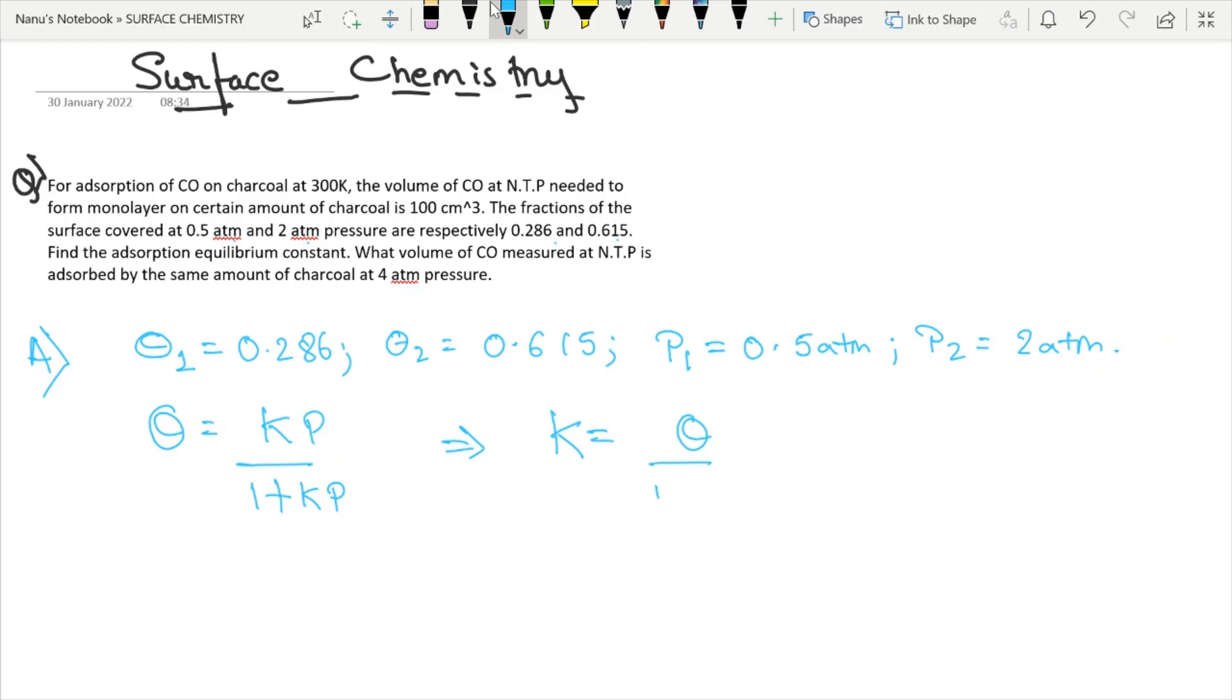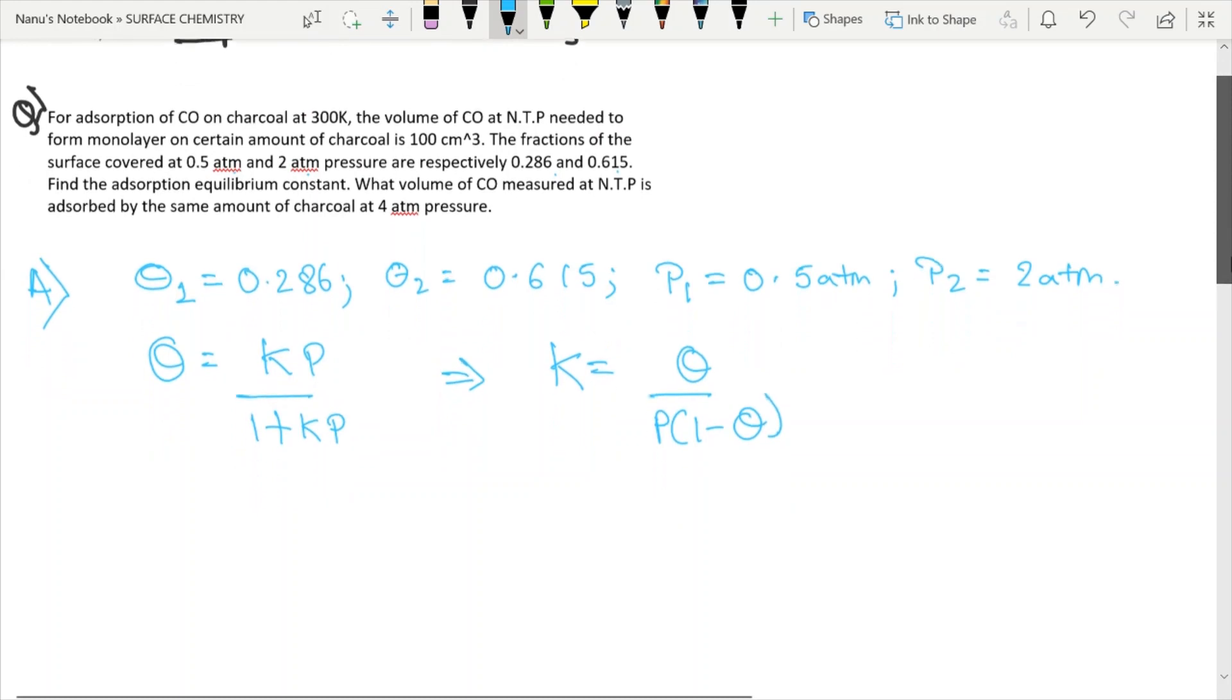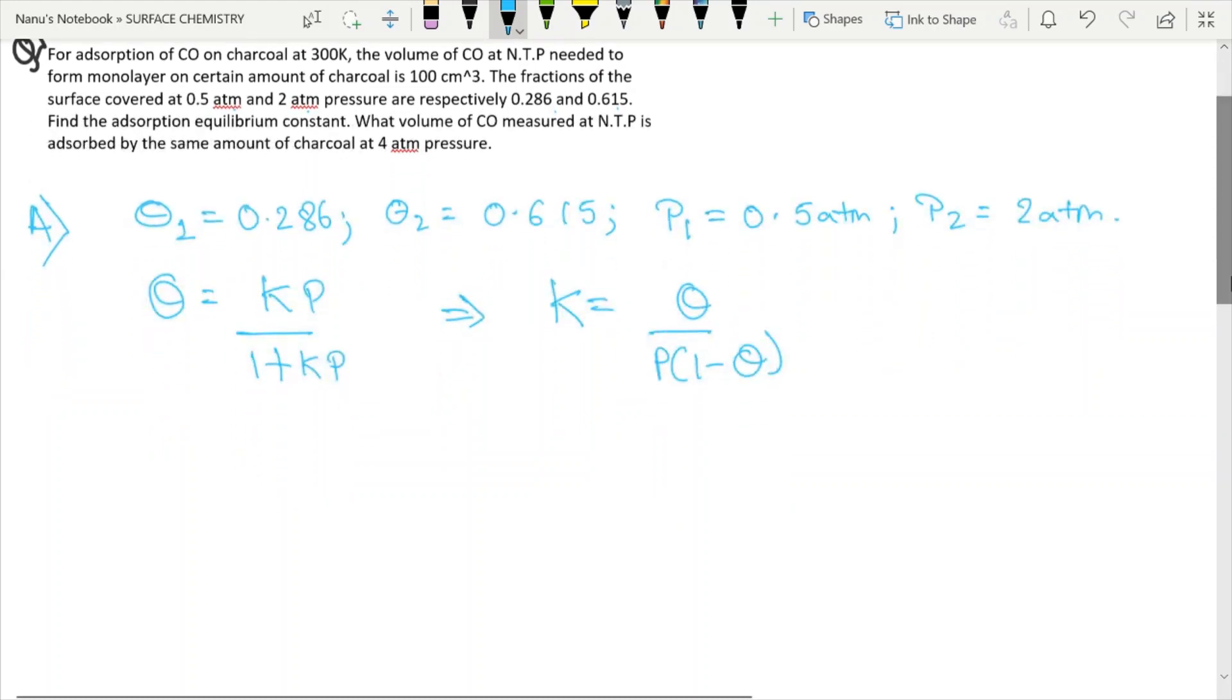You guys can pause the video, try to do it on your own and see whether it's matching or not. That will be a good test for you. We'll simply put all our values in the first case. K equals theta, which is 0.286 divided by p, which is 0.5, times 1 over 1 minus theta.